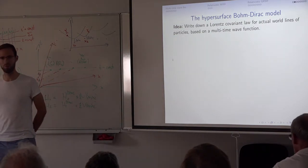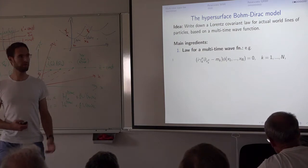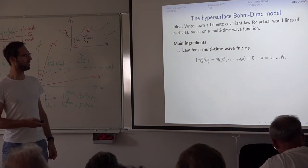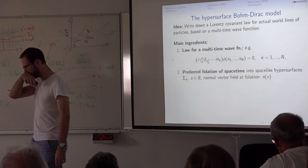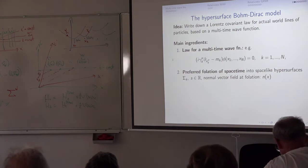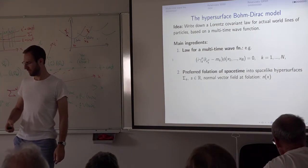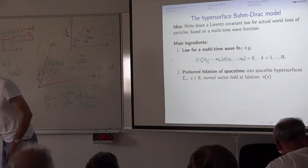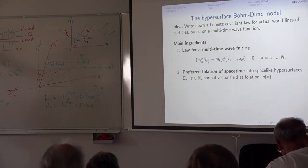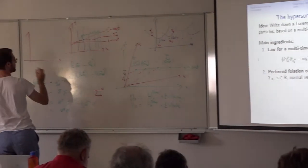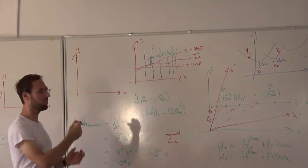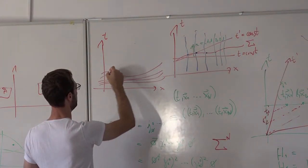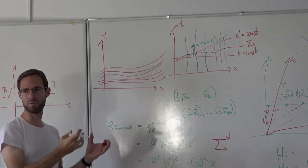Now we come to the relativistic Bohmian model. The basic idea is to write down a Lorentz covariant law for actual world lines of particles, based on a multi-time wave function. The main ingredients are: first, a Lorentz covariant law for the multi-time wave function — for example, the free multi-time Dirac equations; and second, a preferred foliation of spacetime into space-like hypersurfaces σ_s, parametrized by s, with a normal vector field n(x) of the foliation.